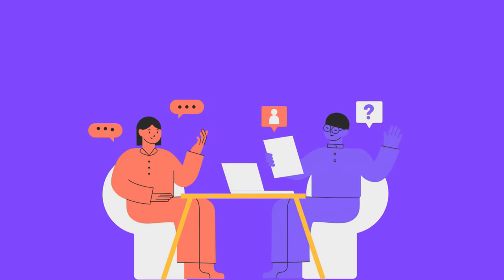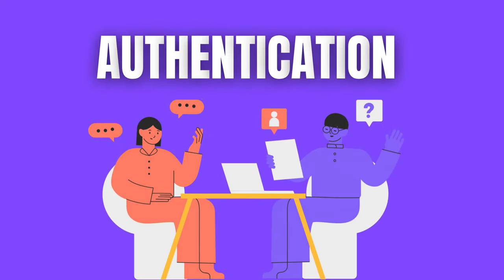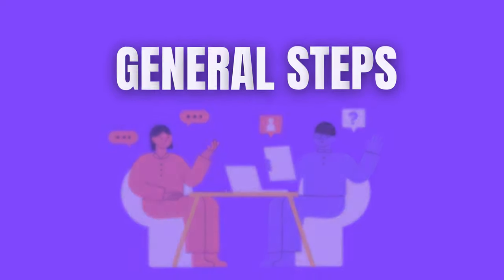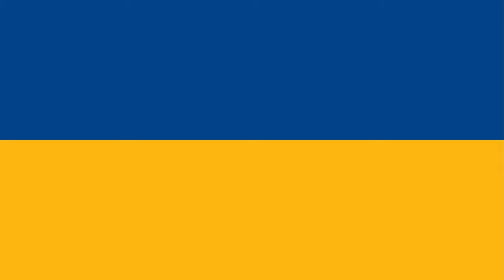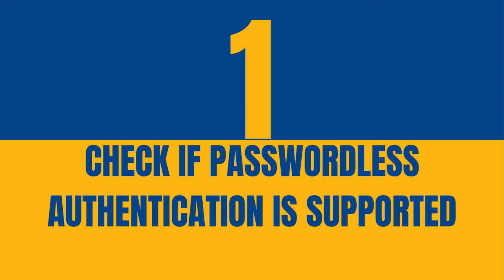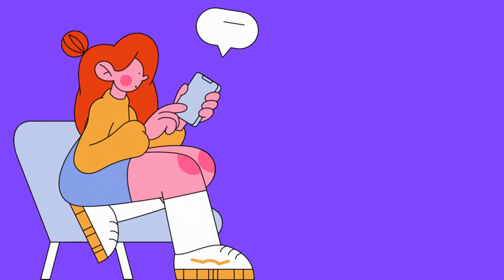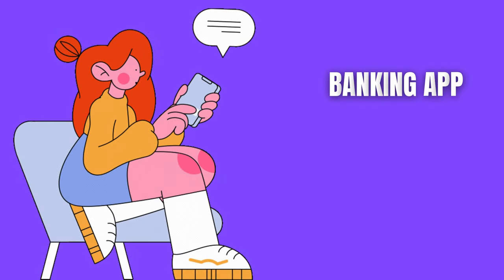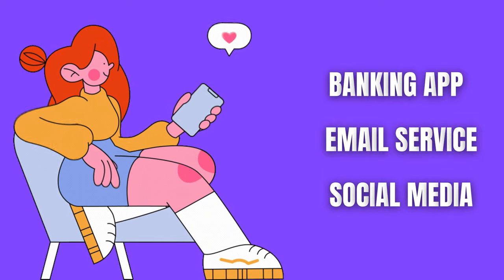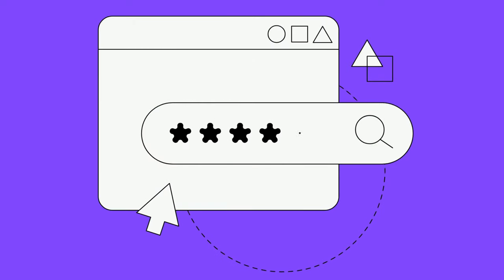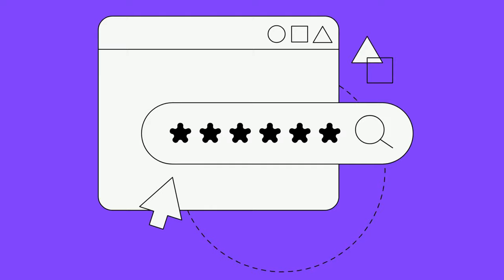Account owners can activate passwordless authentication by following these general steps, depending on the service or device they are using. Step 1: Check if passwordless authentication is supported. Confirm whether the platform — such as a banking app, email service, or social media site — offers passwordless options. This information is typically available in the account security or login settings.